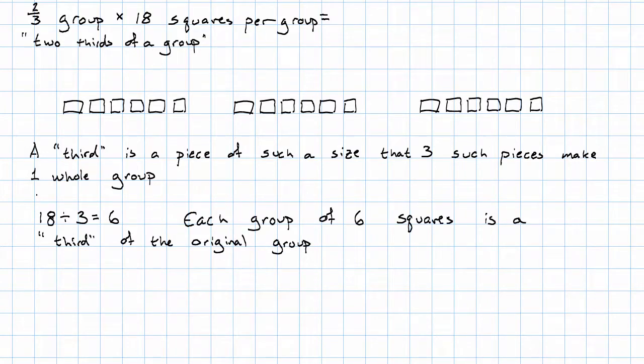So how would we take two thirds then? We would simply take one third and then two thirds. So we would say six times two is 12.